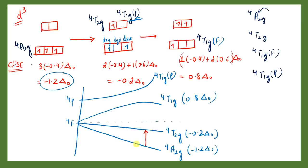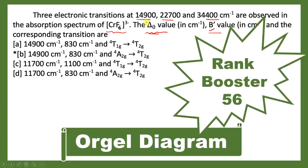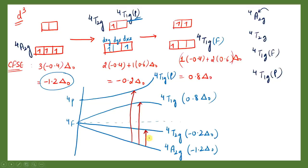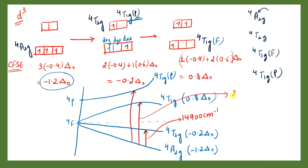Now we decide which transitions are possible. There are three transitions: transition 1 (smallest energy difference), transition 2, and transition 3 (largest). Since energy is directly proportional to wave number, the maximum wave number corresponds to the largest energy gap. We have three wave numbers given: 14900 cm⁻¹ (ν₁), 22700 cm⁻¹ (ν₂), and the third value (ν₃) corresponds to the highest transition.